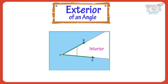The exterior is the space outside the two straight lines. It extends even beyond the ends of the line segments. Here, the area marked in blue is the exterior of the angle.